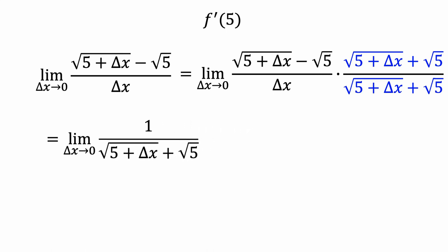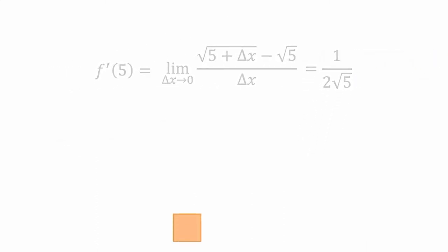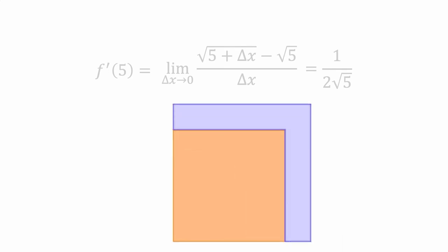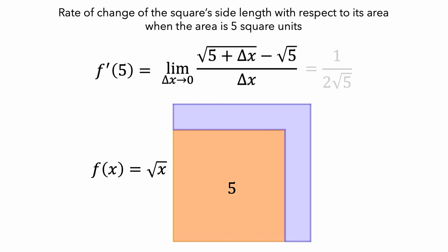Let's make this more compact. In this limit, delta x is getting closer to 0, so the limiting value of this expression as delta x approaches 0 is 1 divided by the square root of 5 plus the square root of 5, or simply 1 over 2 root 5. To summarize: we started with a square whose side lengths were growing and computed the rate of change of the square's side length with respect to its area when the area is 5 square centimeters. We used the definition of a derivative to write this as a limit, and then did algebraic computation to evaluate it as 1 over 2 root 5. So the instantaneous rate of change is 1 over 2 root 5 centimeters per square centimeter.